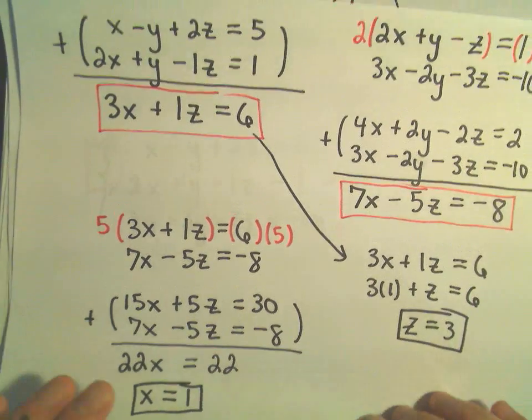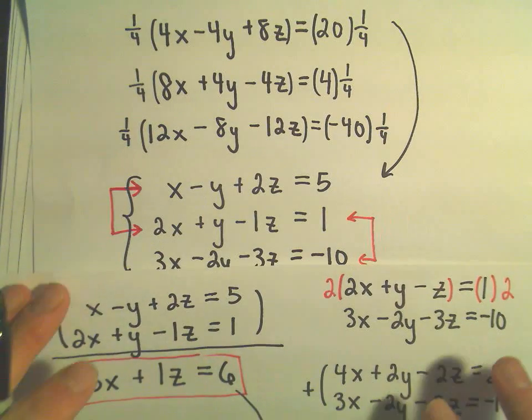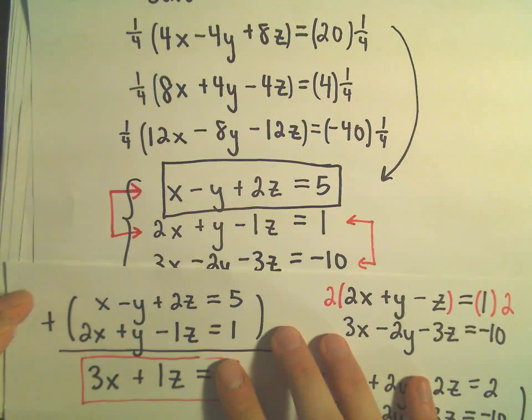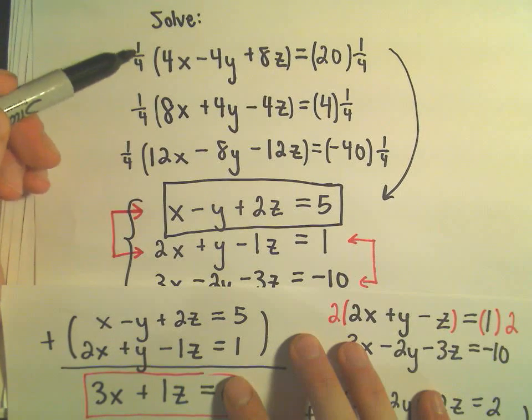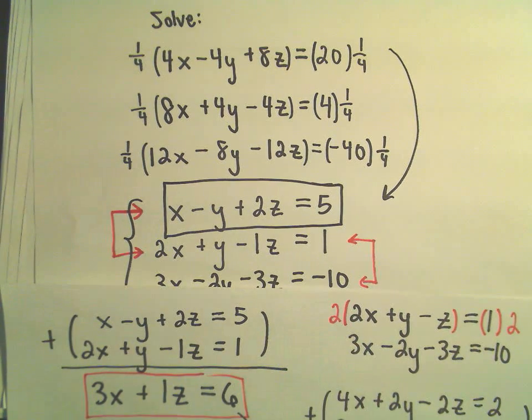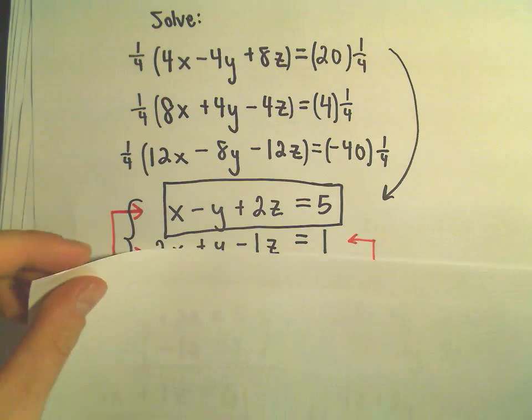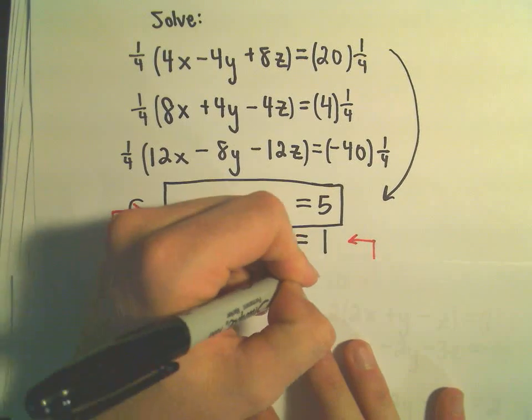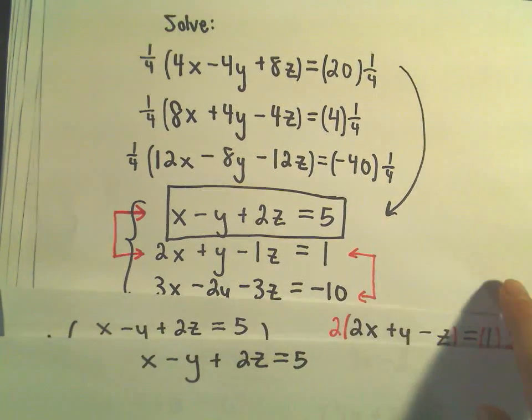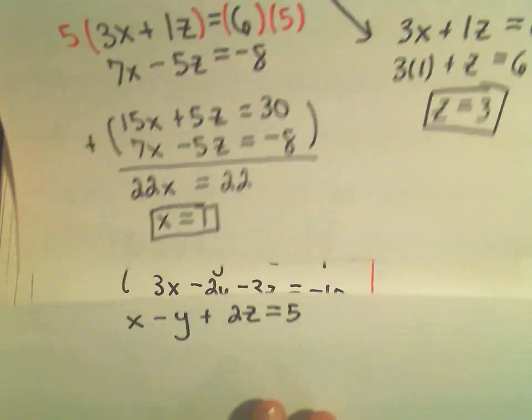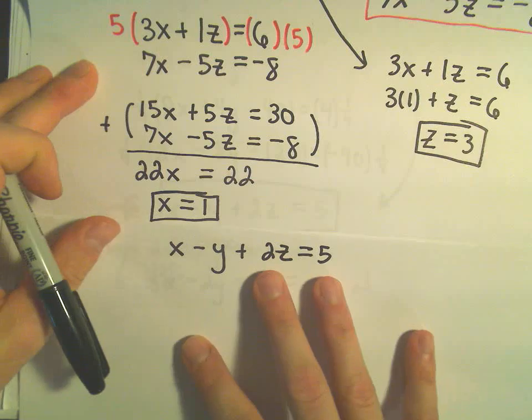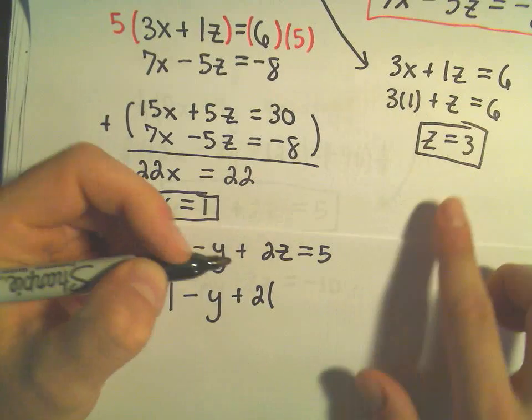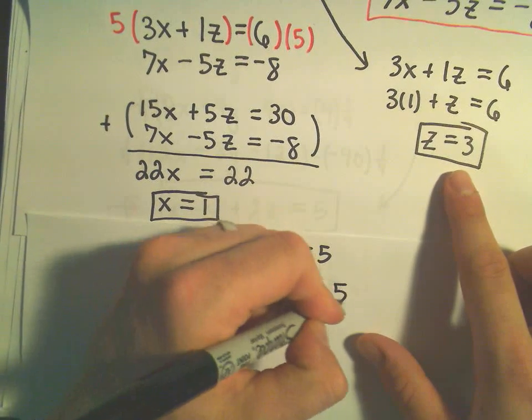And now I just have to go back to one of my equations that had x and y and z. And it doesn't matter which one you use. I'm going to use this. This came from the first equation, remember, after we divided by 4. I'm going to use that equation. Plug in my value for x. Plug in my value for z. And then we'll figure out y. So x minus y plus 2z equals 5. And we figured out that x had the value 1. We said that z had the value 3. So I'm going to plug in 1 minus y plus 2 times z, which is 3, equals 5.